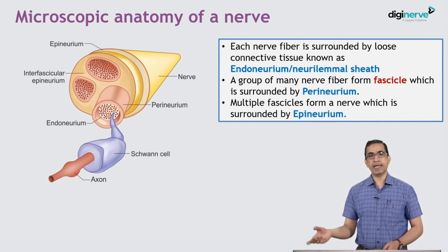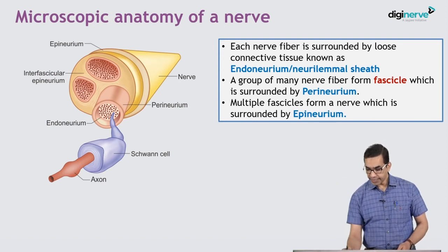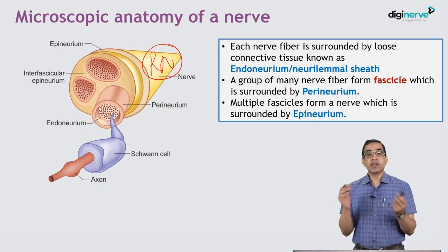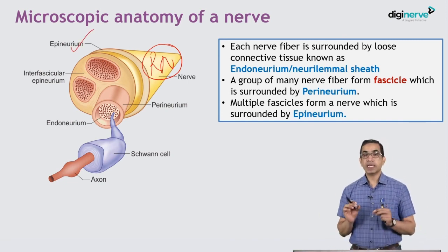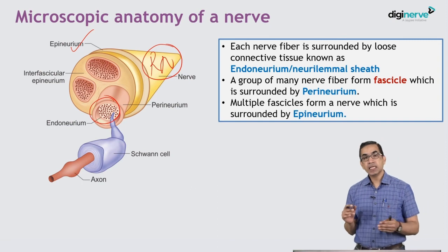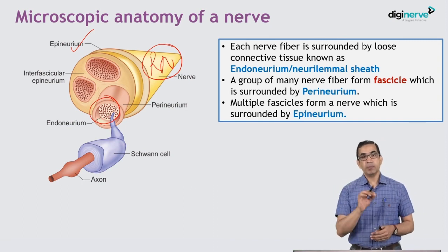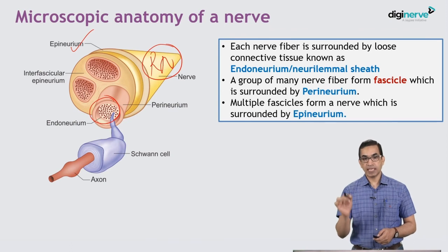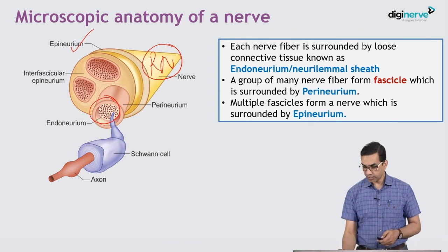The epineurium surrounds the entire nerve. For example, if we say radial nerve — what surrounds the radial nerve proper is the epineurium. But the radial nerve will have many fascicles, and what surrounds each fascicle is the perineurium. Within each fascicle, there will be thousands of single nerve fibers, each surrounded by the endoneurium. From the gross level, we saw what a spinal nerve is, then we went to a single nerve, and now we come to the unit — the axon.